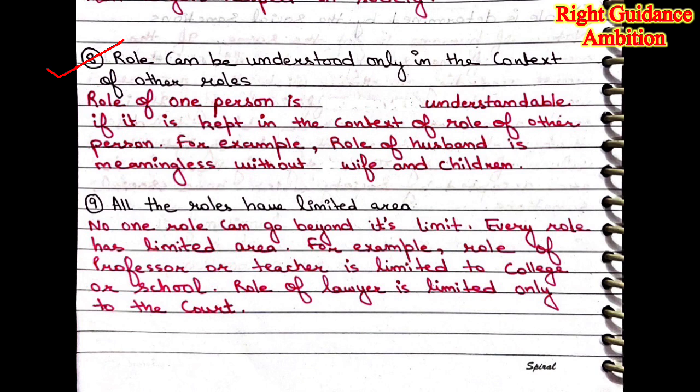8th point: role can be understood only in the context of other roles. The role of one person is understandable if it is kept in the context of another role. We cannot understand one role in isolation because one role is very connected with many people. Like a person can be, at one time, a father, husband, clerk, officer, manager, and chairman — there are a lot of connected things.